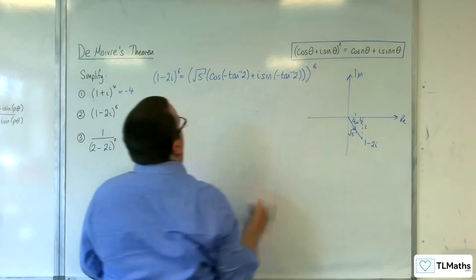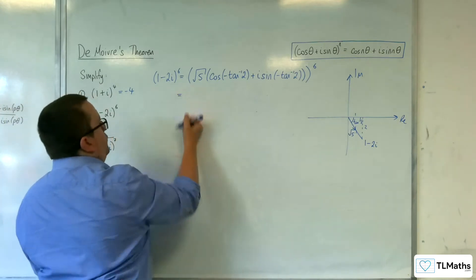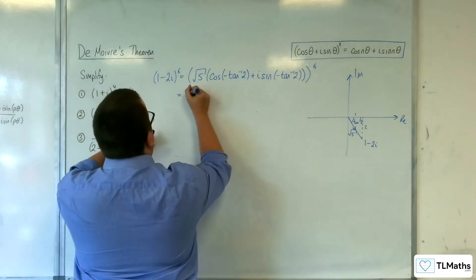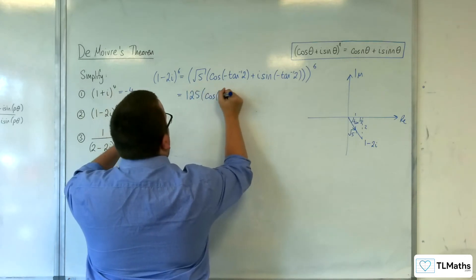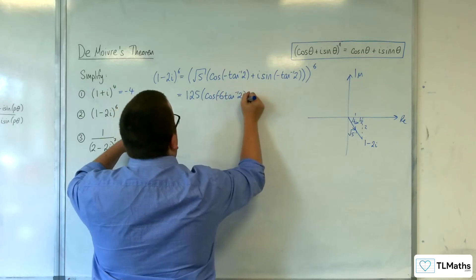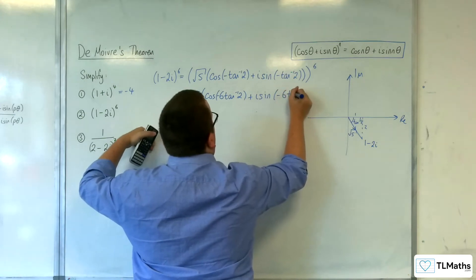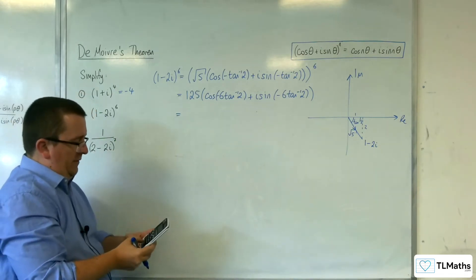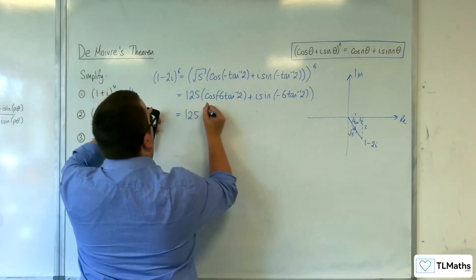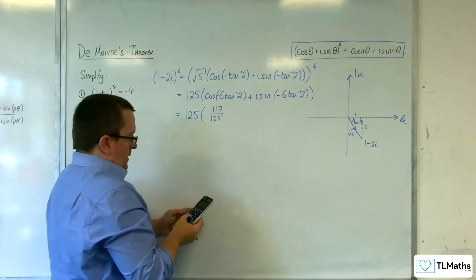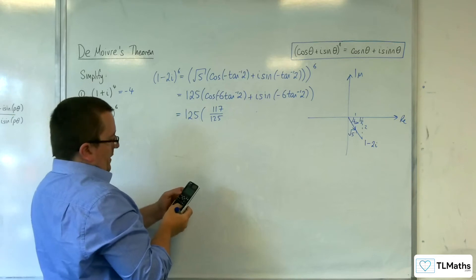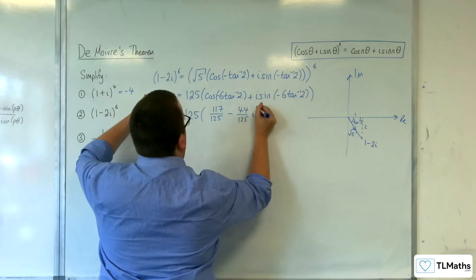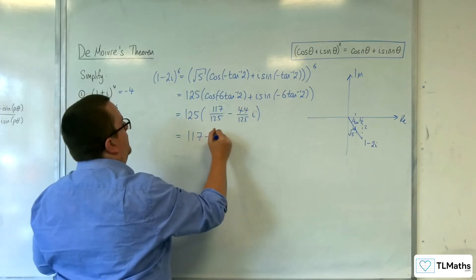Closing the brackets, we have (√5 × (cos(−arctan 2) + i·sin(−arctan 2)))^6. That gives (√5)^6 = 125, times (cos(−6·arctan 2) + i·sin(−6·arctan 2)). Cosine of −6·arctan(2) is 117/125, and sine of −6·arctan(2) is −44/125. So the answer is 125 × (117/125 − 44i/125) = 117 − 44i.